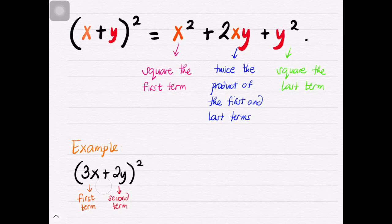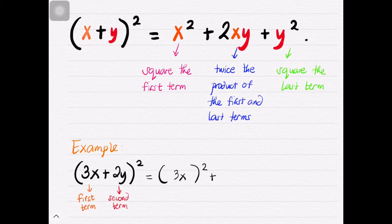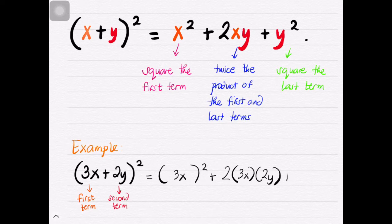For an example, let's have the square of (3x + 2y). Knowing that 3x is the first term and 2y is the second term, applying this algorithm we'll have the square of the first term, which is 3x, plus twice the product of the first term 3x and the second term 2y, and lastly we add the square of the last term, which is 2y. Now review how we apply the algorithm before we simplify these expressions.